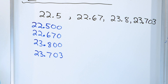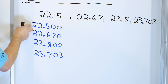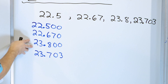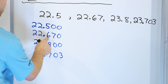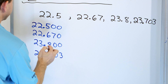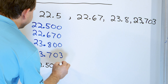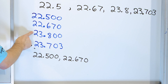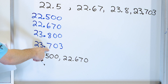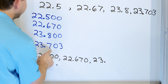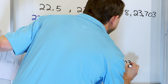Now we compare whole numbers. We have two with 22 and two with 23. Clearly the 22s are going to be the smaller numbers — no matter what the decimals are, the 23s will be larger. Of the 22s, we look at the tenths: one has a 5, one has a 6. So 22.500 is the smallest. Then 22.670 comes next. For the 23s, we look for a tiebreaker: 7 is smaller than 8. So 23.703 comes next, and 23.800 is the largest.